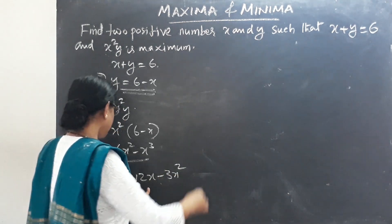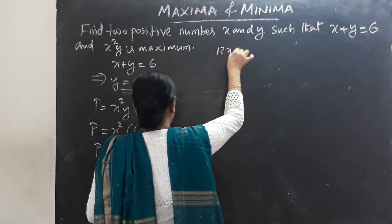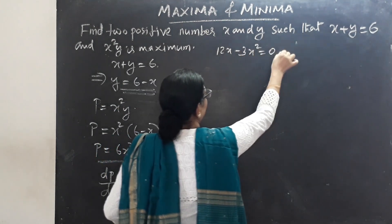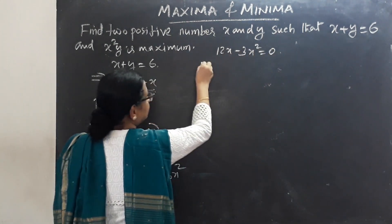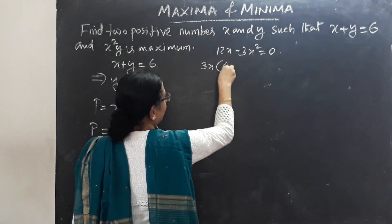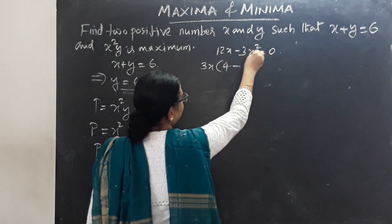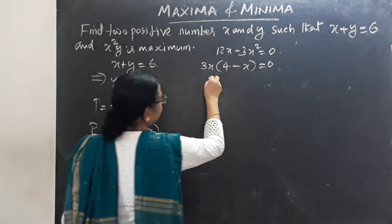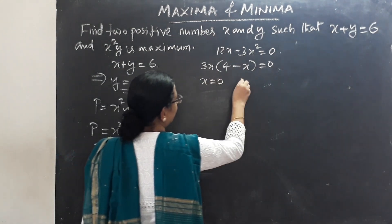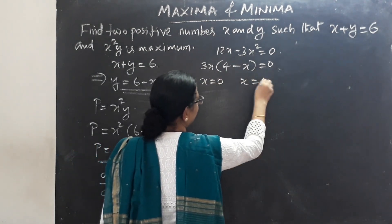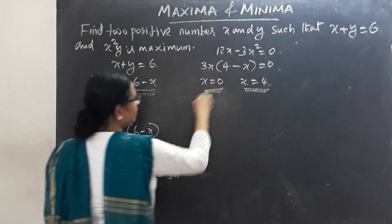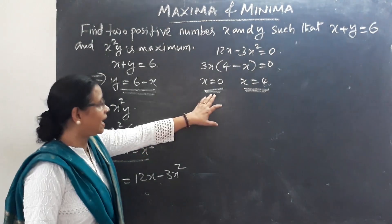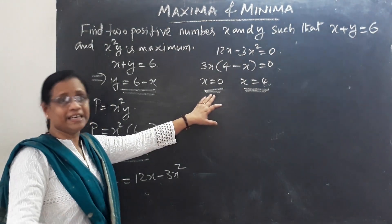dp/dx equals 12x minus 3x², set equal to zero. Factoring out 3x gives 3x(4 minus x) equals zero. So x equals 0 or x equals 4. We have two critical values.